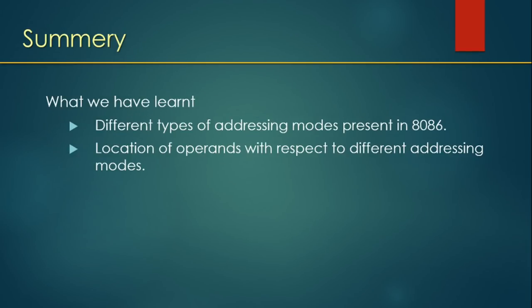In summary, we have studied different addressing modes and understood how different addressing modes have data in different locations. Sometimes you have the data directly, sometimes you have an address, sometimes you have a register holding the data, and sometimes you have a register pointing to an address. These are all the different addressing modes of 8086. Thank you so much.